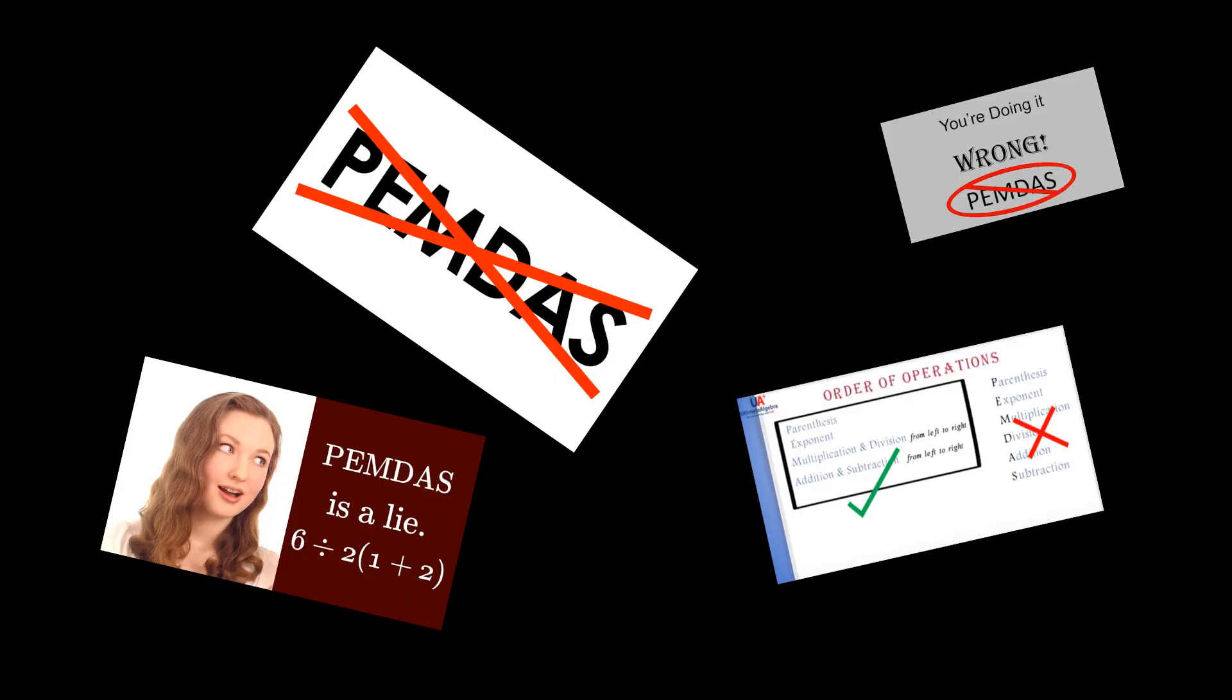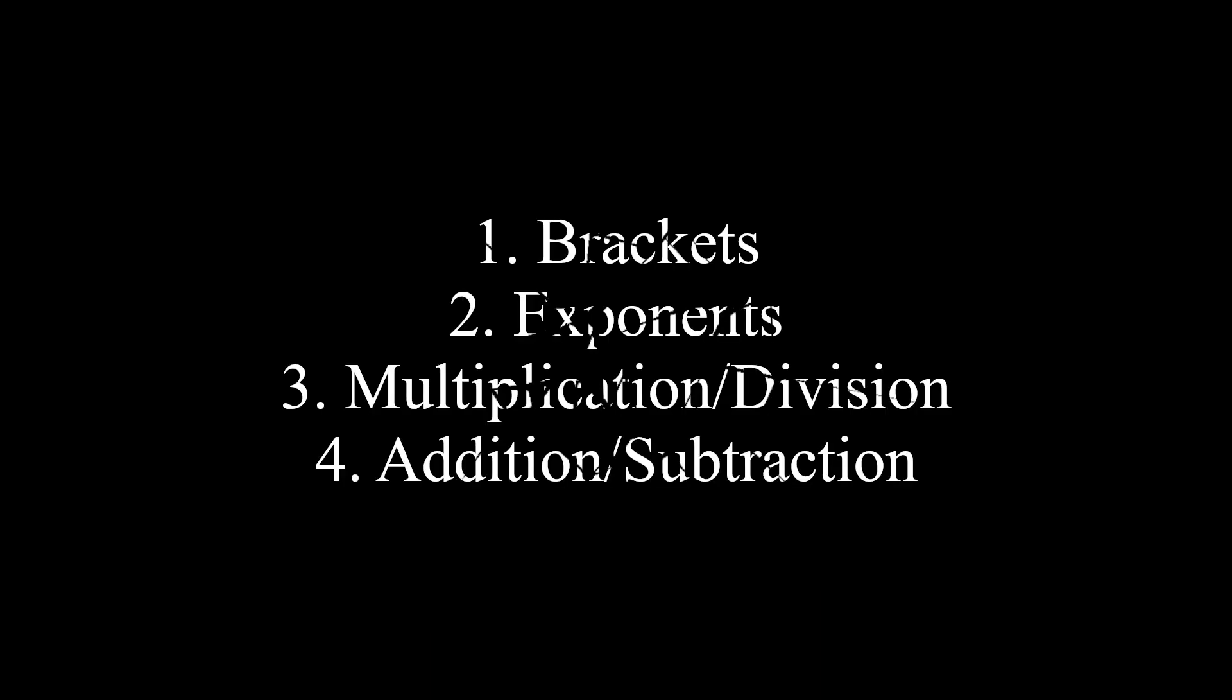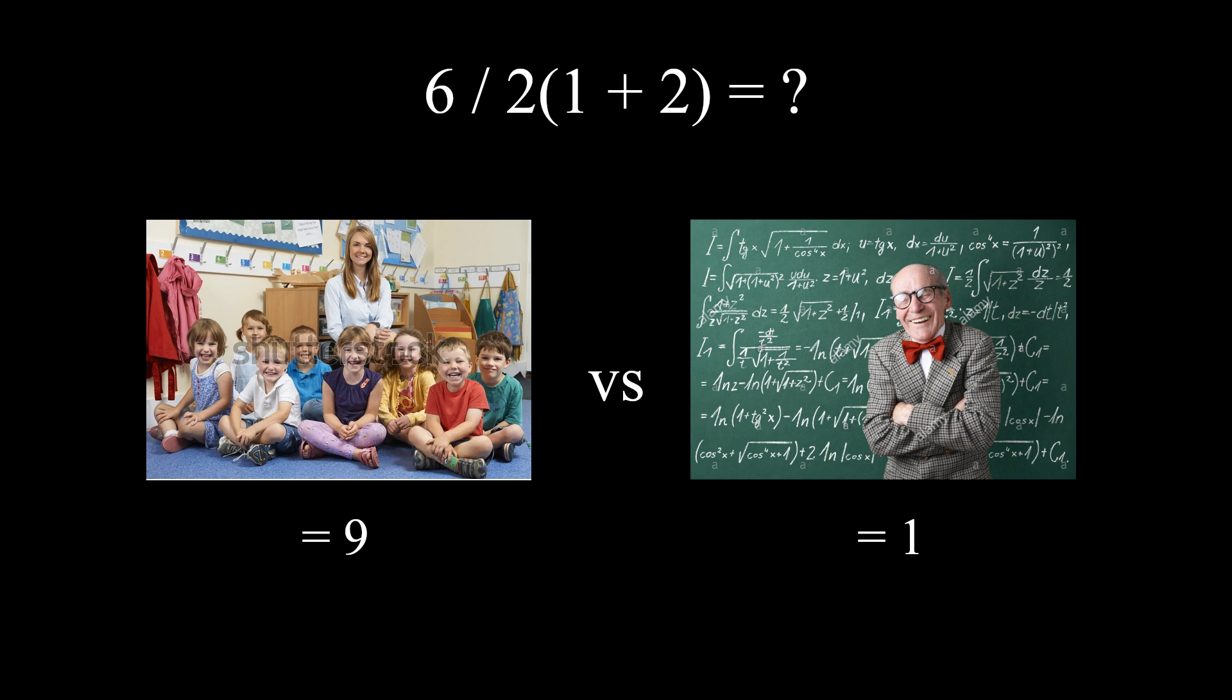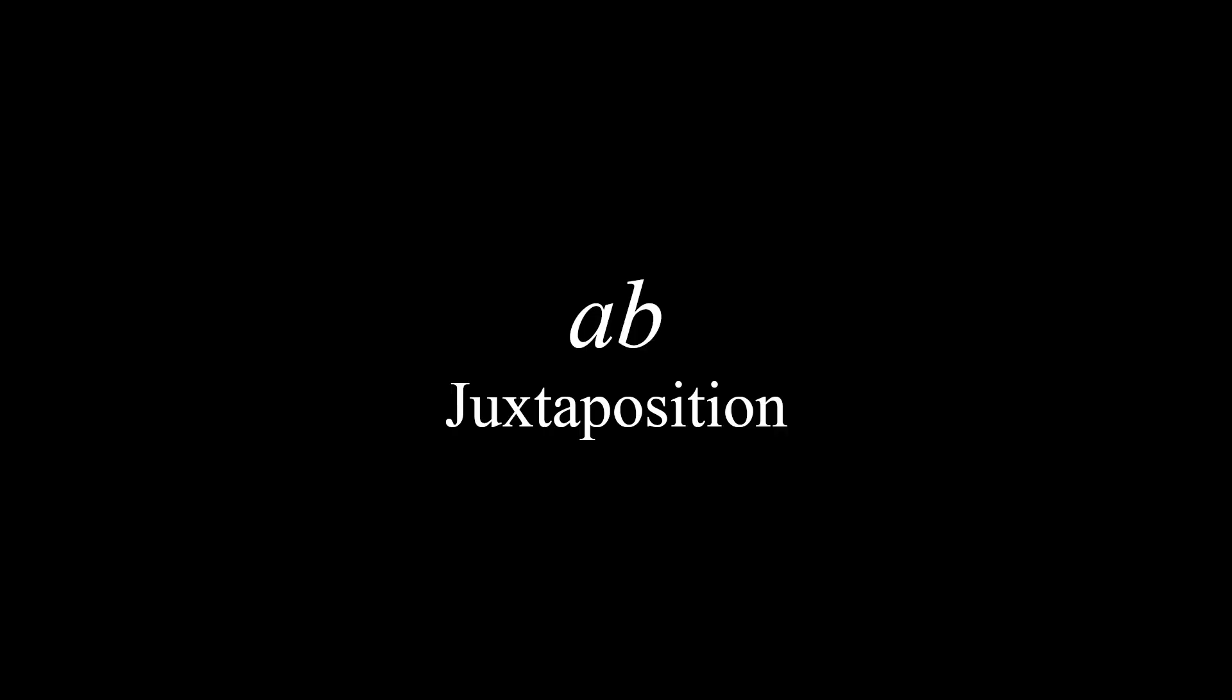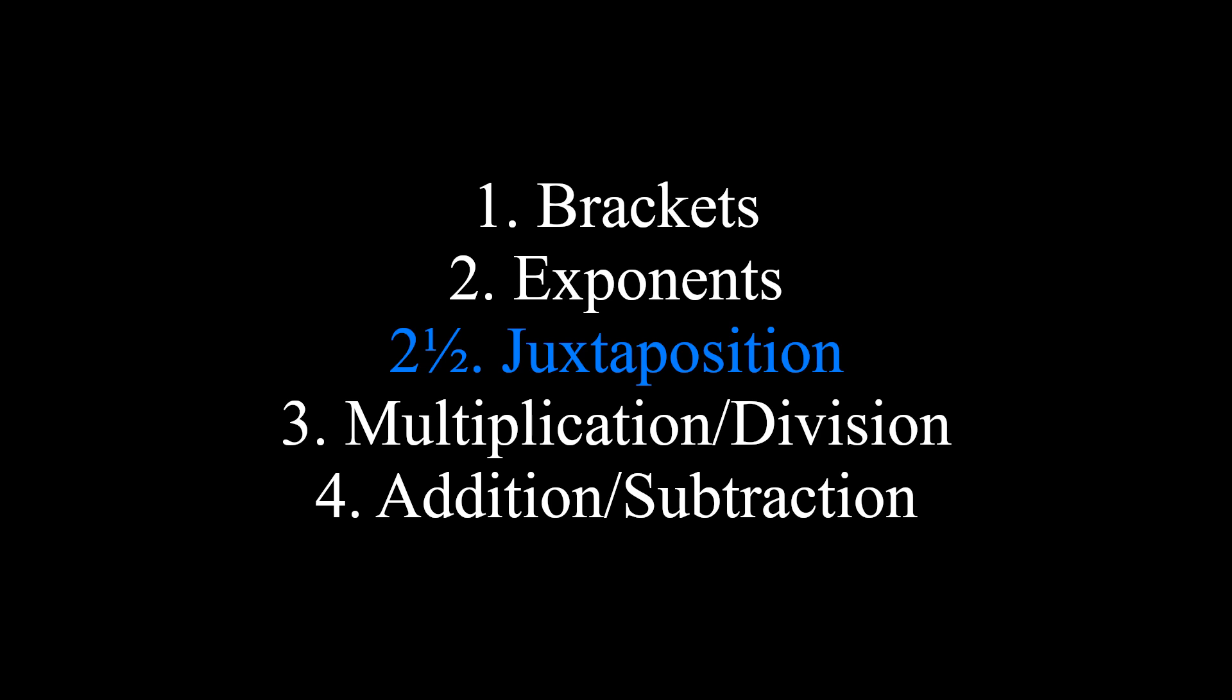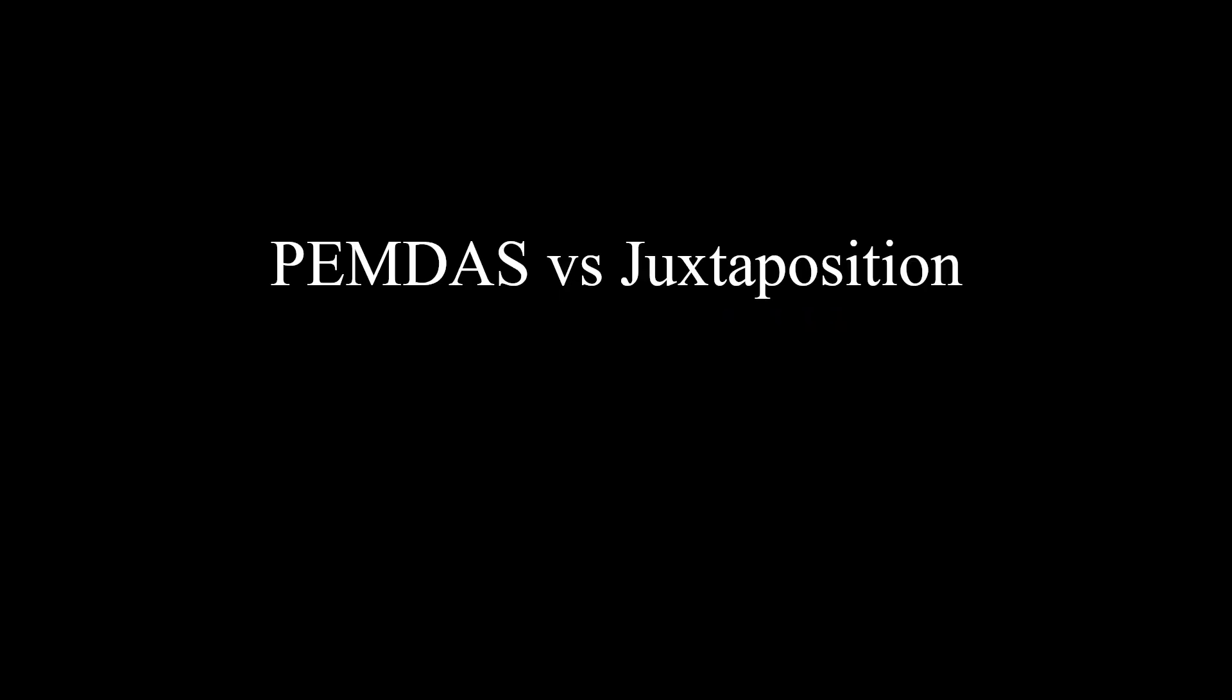While many have explored how PEMDAS is ambiguous, comparatively few people have asked why it's so unintuitive. One way we could try and find out is by seeing what system actual mathematicians use and why they prefer it over PEMDAS. Implied multiplication or multiplication by juxtaposition is when you multiply two variables by putting them next to each other, and this is usually interpreted to have higher precedence than regular multiplication and division.